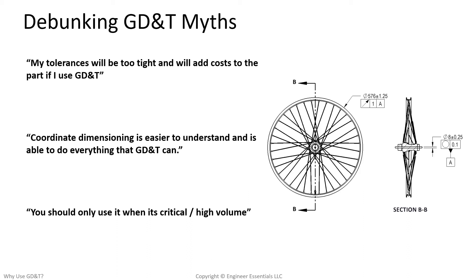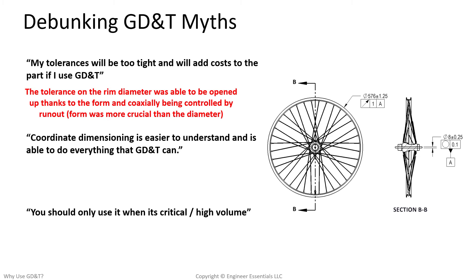We hear a lot of GD&T myths here at Engineer Essentials. First off, we often hear that students are worried that if they use GD&T it'll end up adding cost to the part. Well, we saw with this example that we were actually able to open the size tolerance of the rim diameter while maintaining the form control — the radial trueness of the rim — to less than one millimeter using the control known as runout.